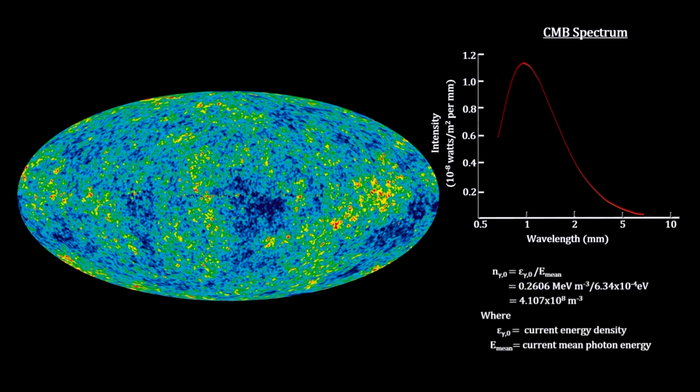The black body radiation formula also gives us the number density of CMB photons. There are over 400 million of them in every cubic meter of space throughout the cosmos. This is a thousand times more than all the photons from all the starlight ever created by all the stars and all the galaxies for all the billions of years the stars have been shining.